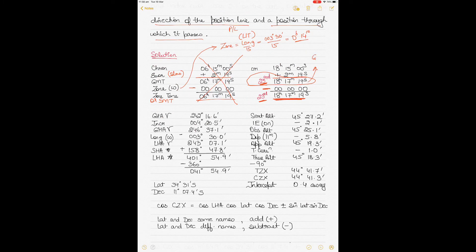The correct GMT becomes 23rd of August 18:17:19. Using this GMT, I will find the GHA Aries for 1800 hours, then find the increment for 17 minutes and 19 seconds, and add the increment to get the corrected GHA Aries. The other two things to find are the SHA of the star Spica and the declination of Spica — both available from the 1992 Nautical Almanac.